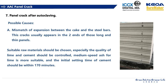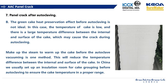The next problem is panel cracking after autoclaving. The AAC panel is different from the AAC block. Vertical cracks at cake ends are probably caused by the mismatch of expansion between the cake and the steel bath — these cracks usually appear in long and thin panels. We should adopt suitable raw materials, especially paying attention to the quality of lime and cement. Medium-speed lime is more suitable, and the initial setting time of cement should be within 170 minutes. Sometimes the green cake heat preservation effect before autoclaving is not ideal, causing a low cake temperature and a large temperature difference between the internal and surface of the cake, which may cause cracking during autoclaving. Generally, we can supply steam to warm up the cake before autoclaving to reduce this temperature difference.